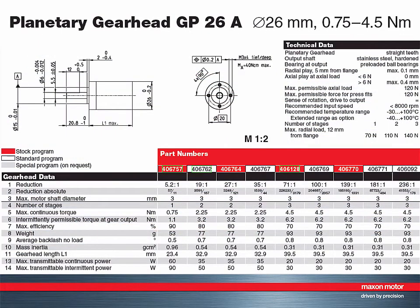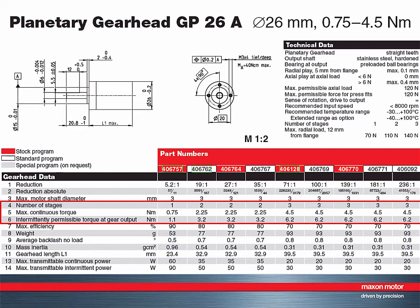Let's investigate this gearhead in more detail. The first thing to note is that for the GP26A there are different reduction ratios possible, each with a different order number. The lowest reduction, based on one gearhead stage, can be found on the left. The highest reduction — here with three stages — is in the rightmost columns. We observe that the torque capabilities increase with an increasing number of stages.